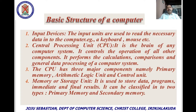Second is the central processing unit, CPU. It is the processing unit of a computer and the brain of any computer system. It controls the operation of all other components. It performs calculations, comparisons, and general data processing. The CPU has three major components: primary memory, arithmetic logic unit, and control unit.